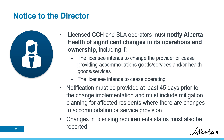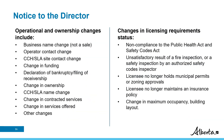Examples of required reporting scenarios include operational and ownership changes such as business name change, operator contact change, continuing care home or supportive living accommodation site contact or name change, change in funding (for example, a funding source change that could switch from a supportive living accommodation to a continuing care home), declaration of bankruptcy, filing of receivership, change in services offered or contracted services, and other changes.